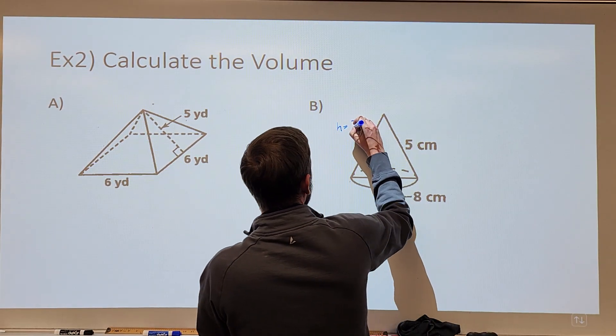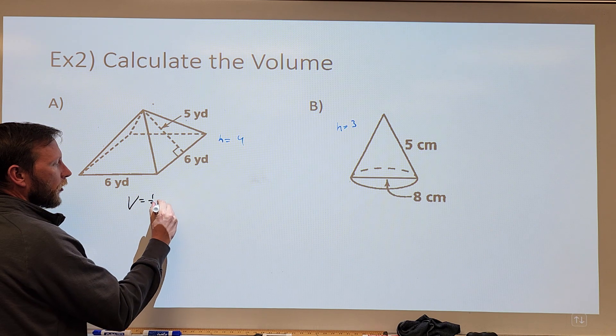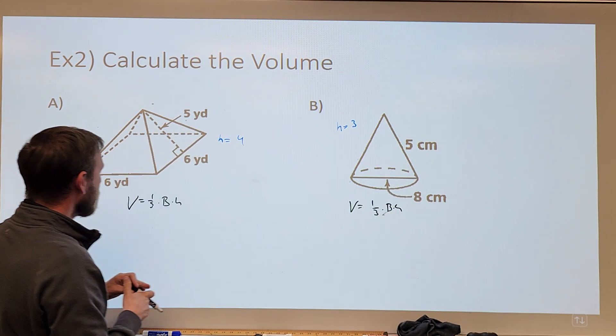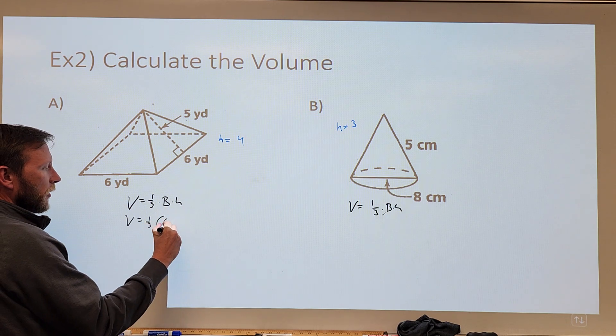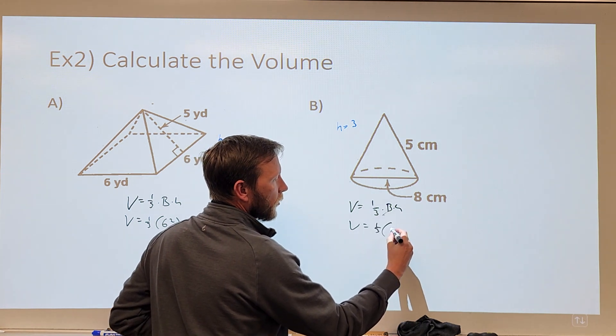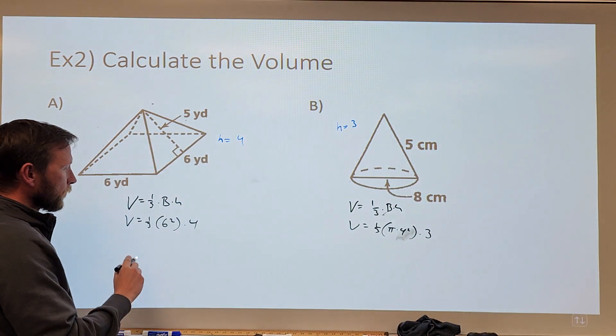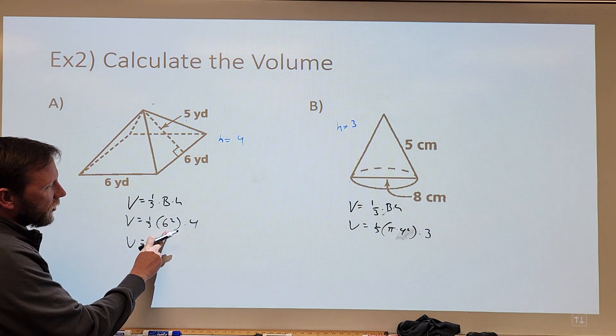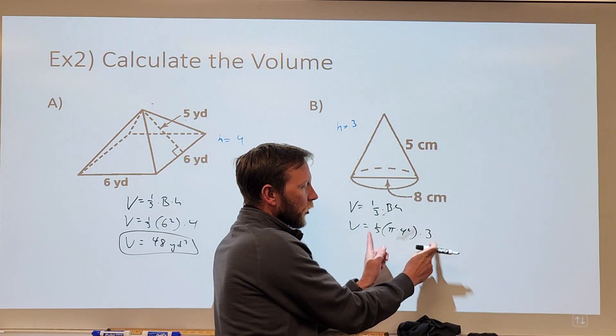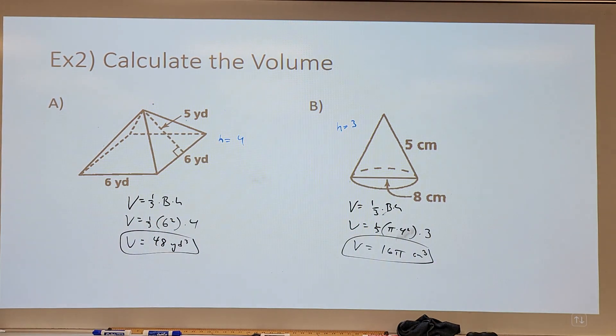And now let's use that to find the volume. We found here that h was equal to four. So if our volume is found by taking one-third times the area of the base times the height, then that means that we get to take one-third times the area of the base, which is 6 times 6, and the height we found was 4. Over here, the volume is going to be one-third times the area of the base, pi times the radius is 4 squared, and the height we found was 3. And so with this, we get one-third of 36, which is 12. 12 times 4 is 48, and the volume is measured in cubic units. One-third times 3, those will cancel each other out. We are going to be left with 16 pi cubic centimeters.